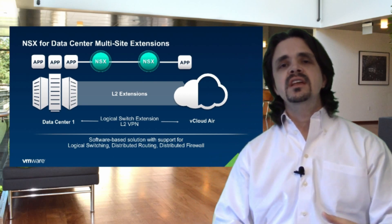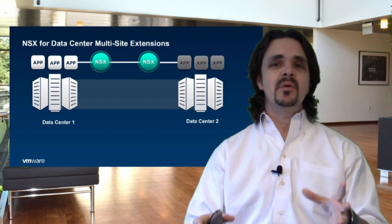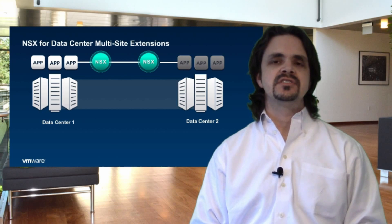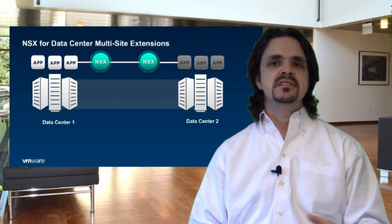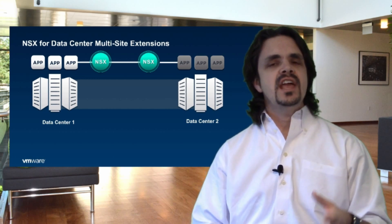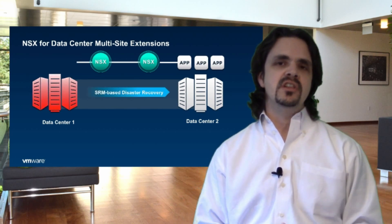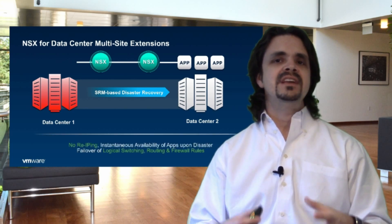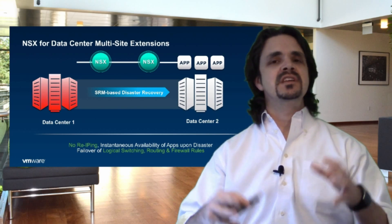One of the issues with disaster recovery has always been: what do I do with the IPs, what do I do with the networking when it gets over to the other side? Well, NSX has an answer for that. Using site extension through NSX, if there is a disaster, you're able to not have to worry about modifying those workloads and changing all of the network addressing. NSX is going to be able to take care of that because the network is extended — the same way we're moving the workloads, we can move the network.